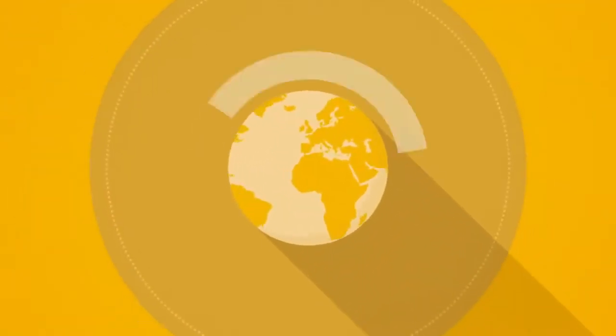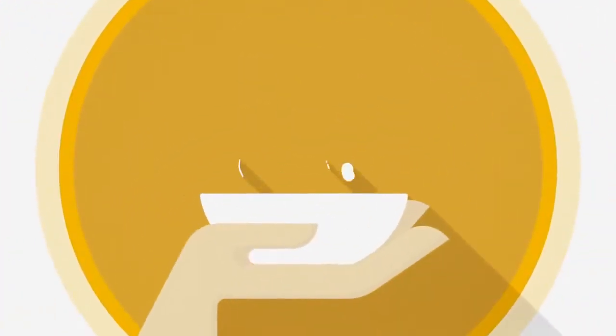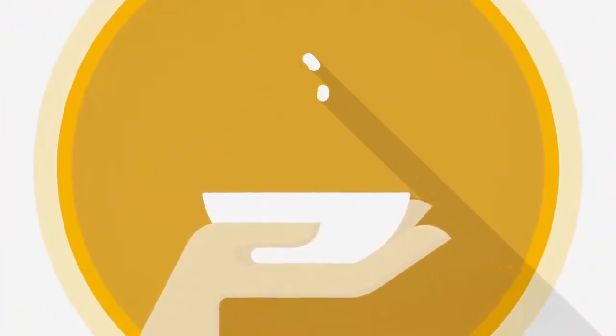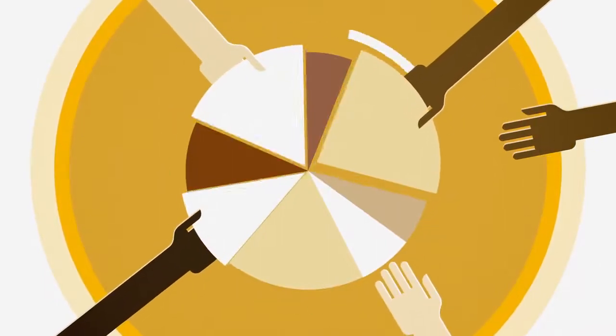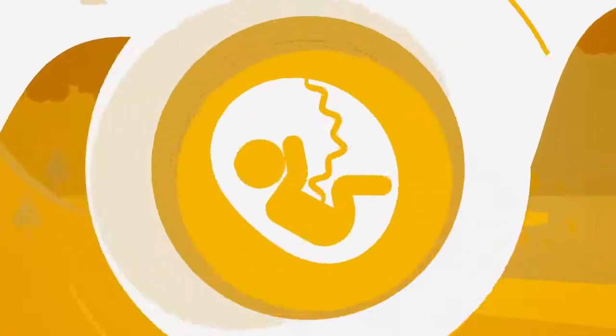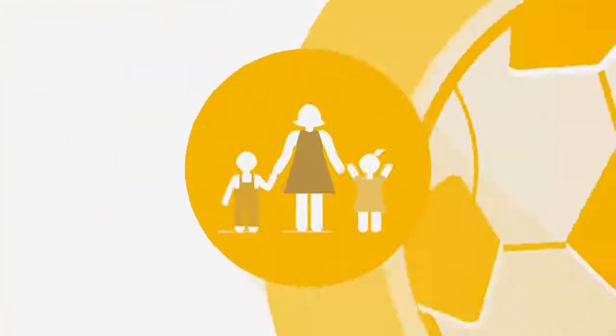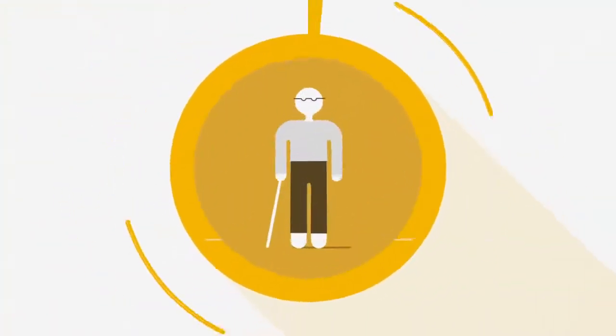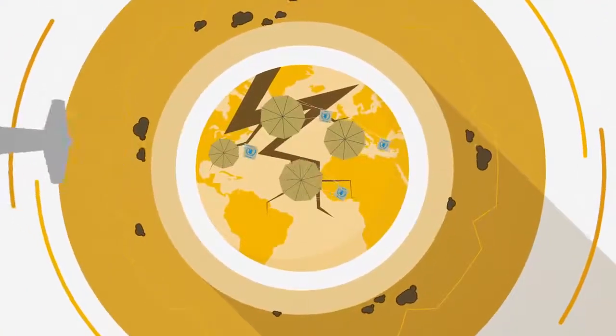On this planet we want zero hunger by 2030. What does that look like? It means access to nutritious food for everyone, starting with those furthest behind, from birth to childhood, adolescence, motherhood and old age.